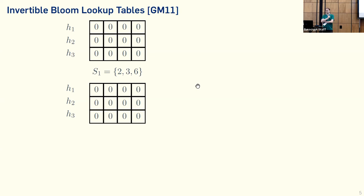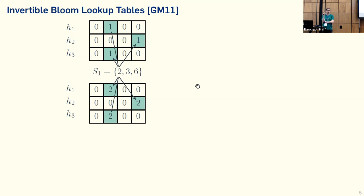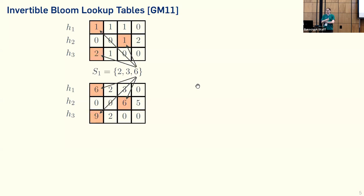In the upper matrix — the count matrix — we count how many elements were mapped to each specific cell. In the lower matrix — the value matrix — we simply add up all the elements that get mapped there. We map the first element, which gives us some ones in the count matrix and some values in the value matrix, then map the second and third elements to different positions. We end up with these two matrices.